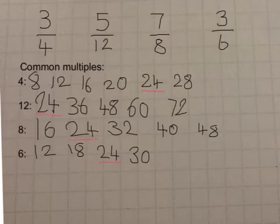As you see, I have found the common multiples of all 4 of the denominators. A denominator of a fraction is the bottom number. The common multiple is 24, and as you can see, I've underlined them in red.